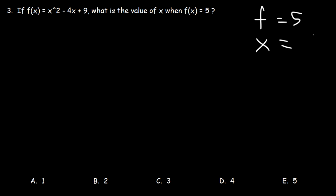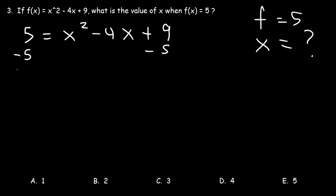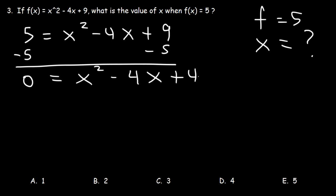Here's another problem. If f of x is equal to x squared minus 4x plus 9, what is the value of x when f of x is 5? We have the function f, and our goal is to find the value of x. What we need to do is replace f of x with 5, giving us 5 equals x squared minus 4x plus 9. At this point, we just have to do some algebra. The first thing we should do is subtract both sides by 5 — we want the left side to equal 0. This is a quadratic equation.